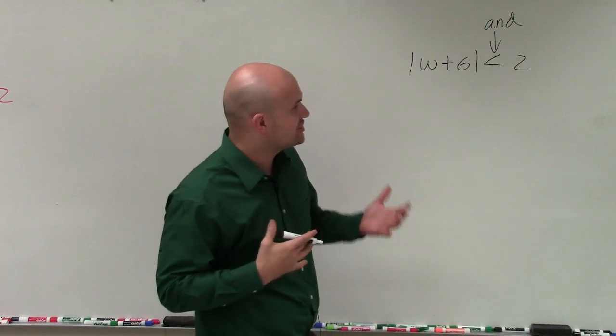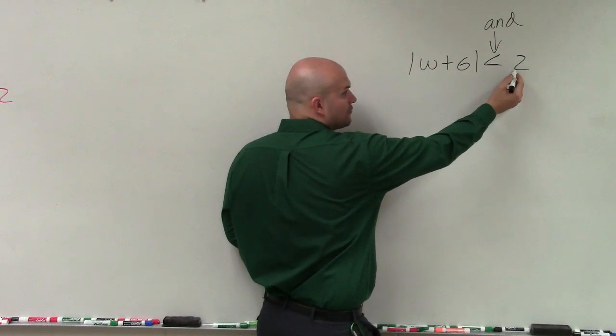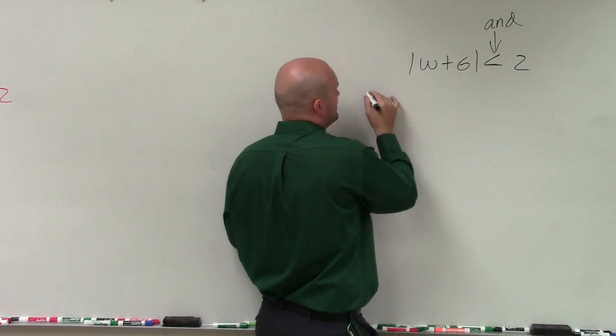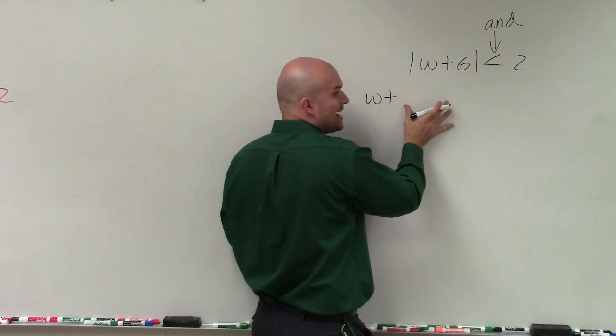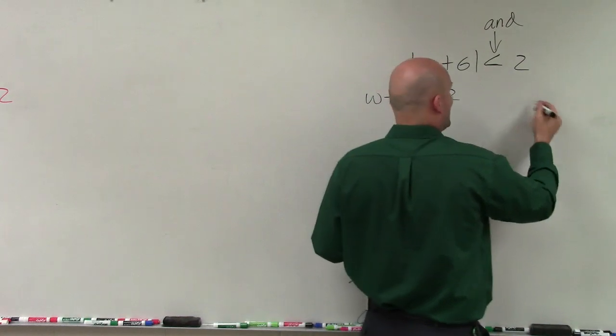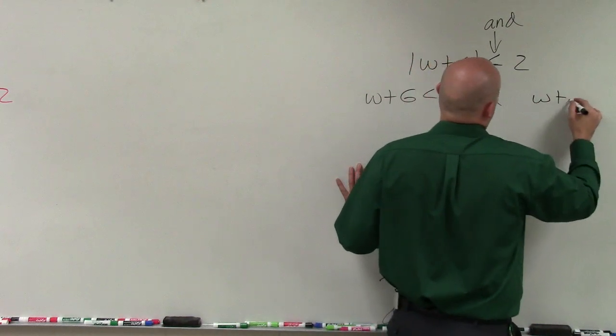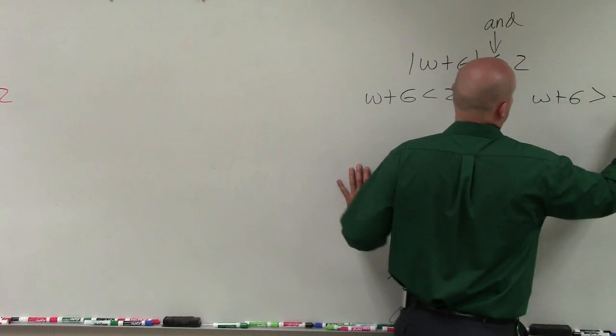So when doing this, I've got to make sure that when I create my two cases, I'm going to have to negate this side for one of my cases. I've got to make sure I flip my side. So my first case, I can remove my absolute value when I create my two cases. I have w plus 6 is less than 2. And you can kind of write this in, sometimes it's helpful. w plus 6 is greater than negative 2.